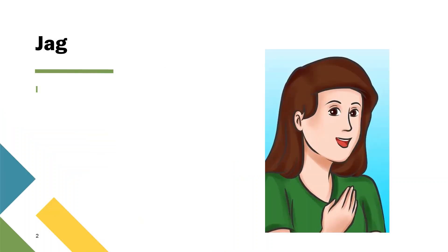Ya means I. We write it like J-A-G but we call it as 'ya'. Just 'ya'. The G is not pronounced so much, it is not stressed. Ya — ya means I.